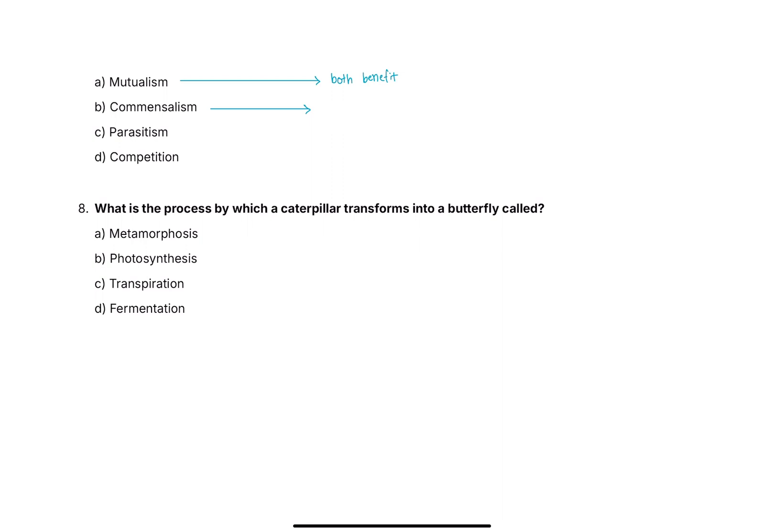Then we talk about commensalism. Commensalism is basically an interaction where one species is benefiting and the other one is neither benefiting nor they are being harmed. They're basically kind of in a neutral position. One of them benefits and one is just in a neutral condition. Then if we come towards parasitism, parasitism basically means that one of the species is benefiting but this is only happening at the cost of the other one. So one is being harmed. And competition is mainly when both of the species are competing against one another.